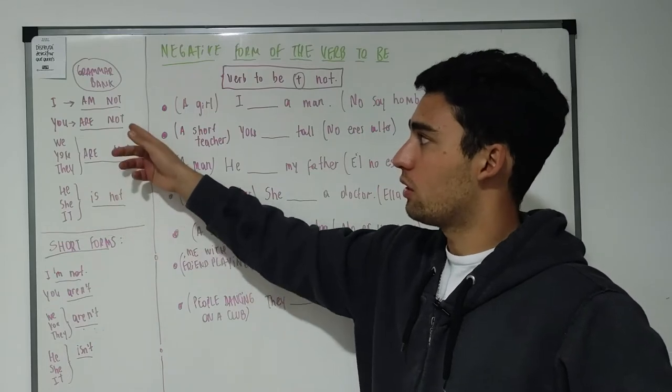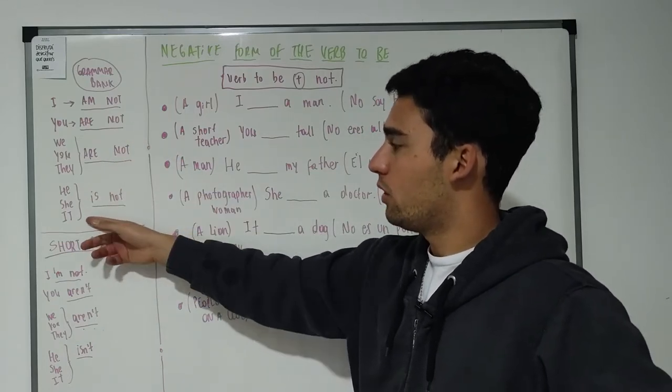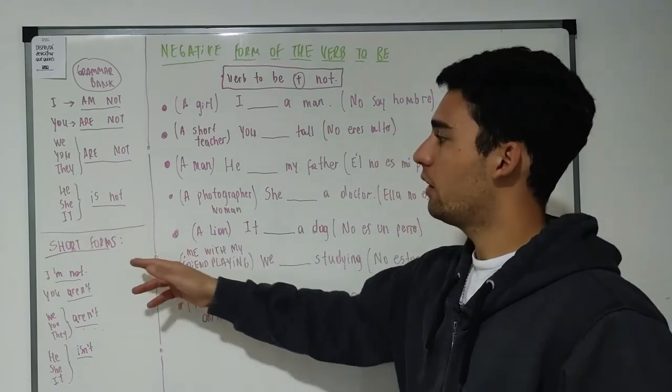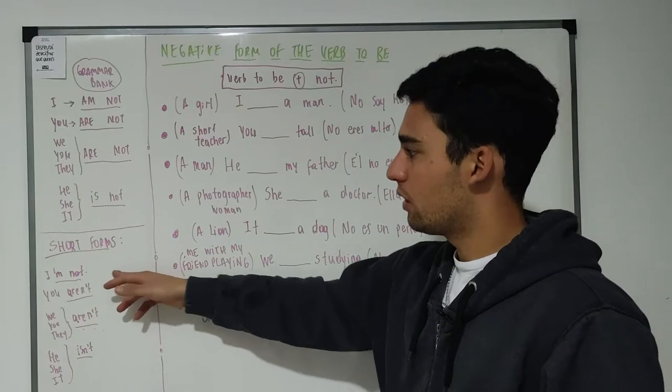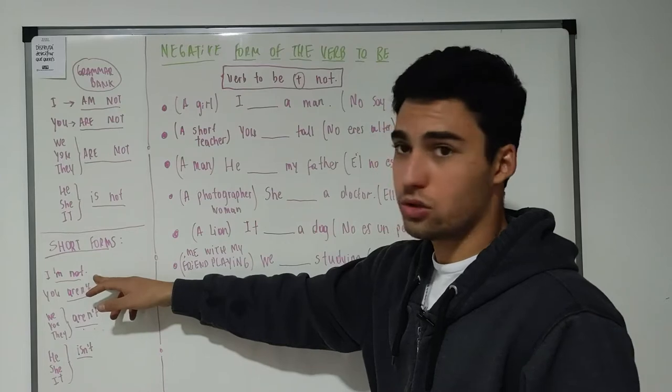The same way as before. And lastly, we use for he, she, it is not. Then we have short forms. I am not, it's made like I'm not.